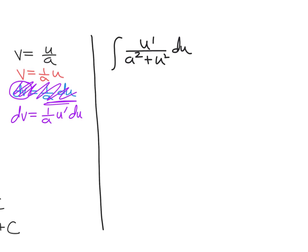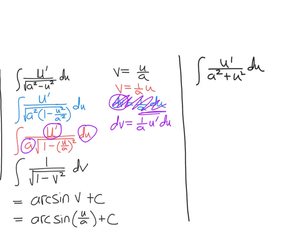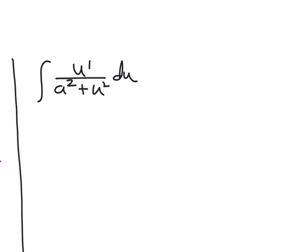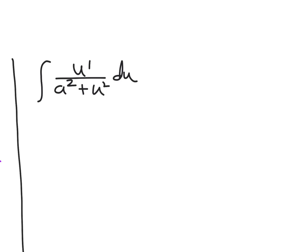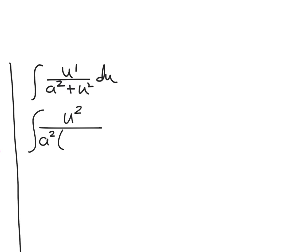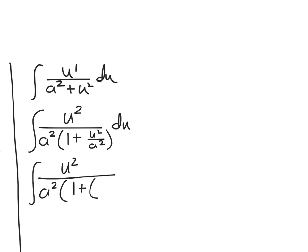This next one is going to be an arc tan situation. You should see a lot of parallels between what we just did and what we're about to do. The idea is that I don't want a squared plus u squared — I want one plus u squared. Same general idea except I want to factor out an a squared, and there won't be a radical to allow simplification.